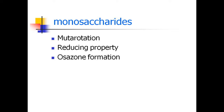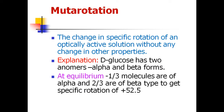The monosaccharide properties are very important: mutarotation is one, reducing property, and verse on formation. The change in specific rotation of an optically active solution without any change in other properties is called mutarotation.